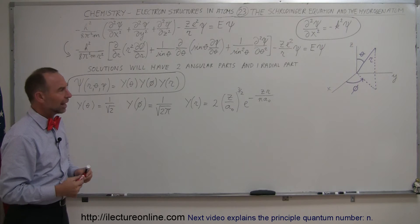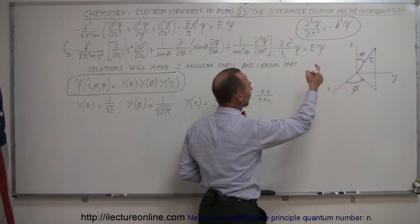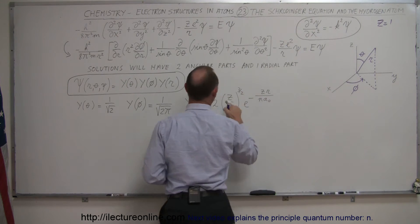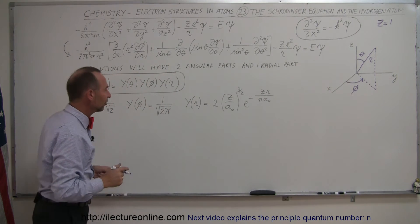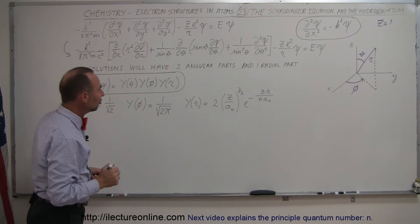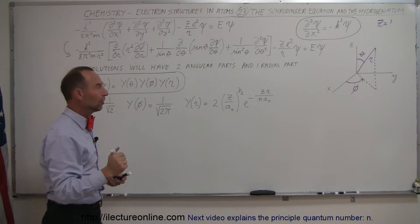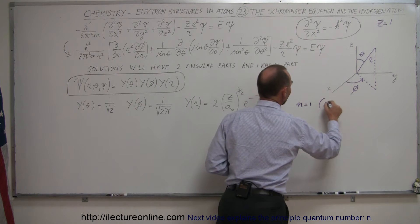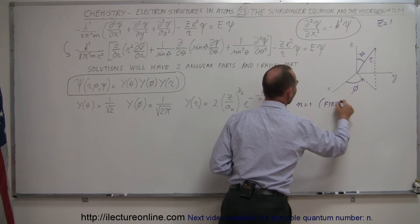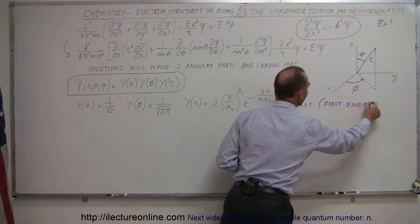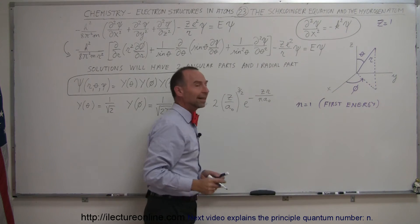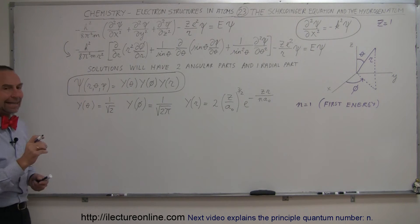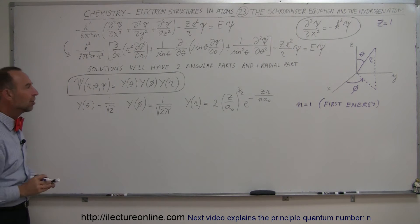Since we're going to be using the hydrogen atom, we can say that Z equals 1 for the hydrogen atom. So this becomes 1, and the whole equation becomes a little simpler. In addition to that, we're going to first consider n equals 1 for the first energy level — the lowest energy level. So what we're going to do now is define the equation that tells us the wave pattern of an electron in a hydrogen atom at the simplest energy level.